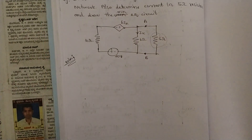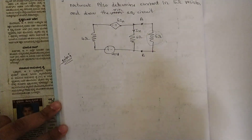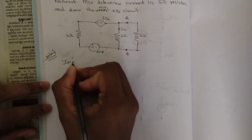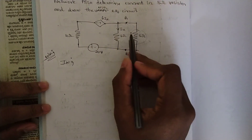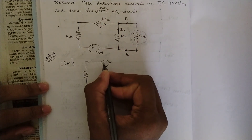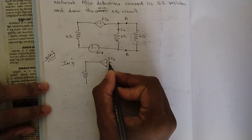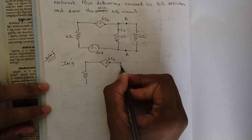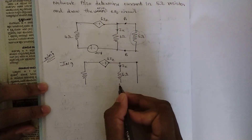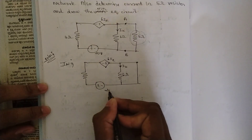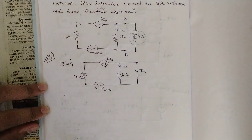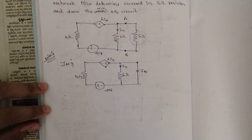To find Norton's current IN, the procedure is: remove the load resistance and make a short circuit. Rewriting the circuit — we have a current-controlled voltage source (dependent source), a 20 volt source, a 4 ohm resistor, and a 6 ohm resistor. The Norton's current is now passing through the short-circuit branch. However, observing carefully, the short circuit and the 6 ohm resistor are in parallel with no resistance on one side.